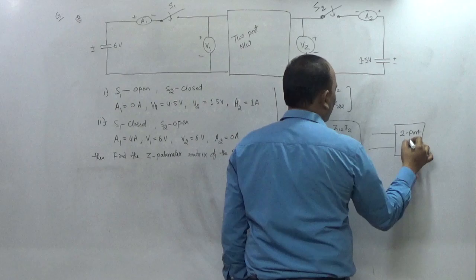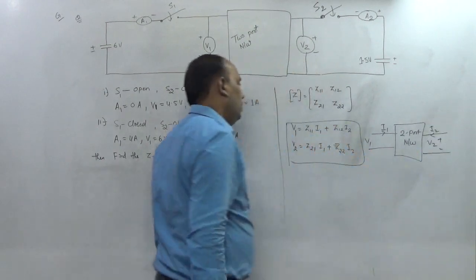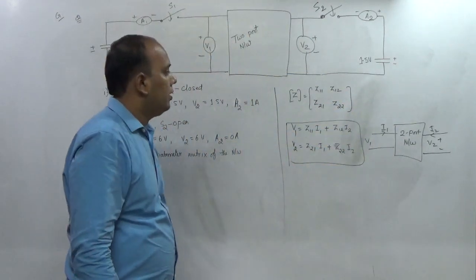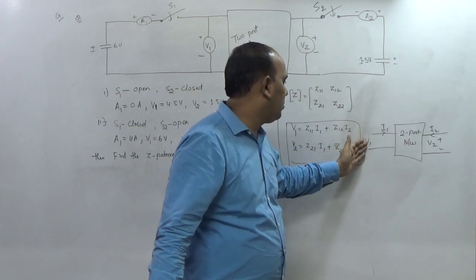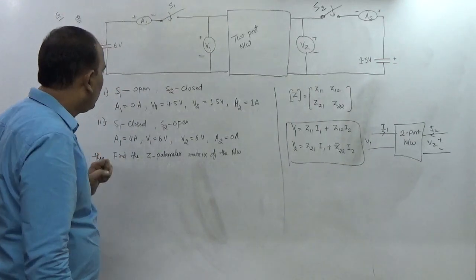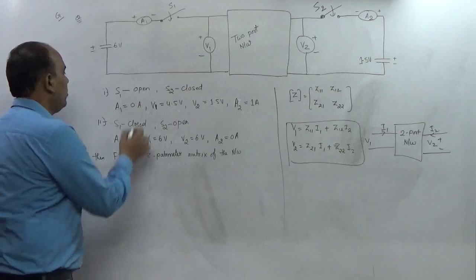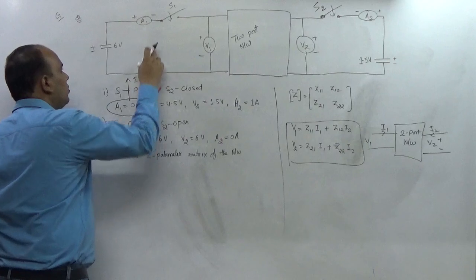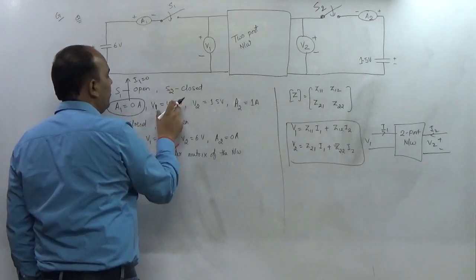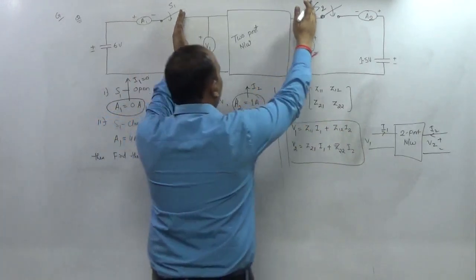For this two-port network, current I1 flows into port 1 with voltage V1 across it, and I2 flows into port 2 with voltage V2. When S1 is open, the ammeter reads 0, so I1 = 0. From the given data: V1 = 4.5, V2 = 1.5, and A2 represents I2 = 1 A. When S1 is closed, I2 = 0 and I1 = 4 A.